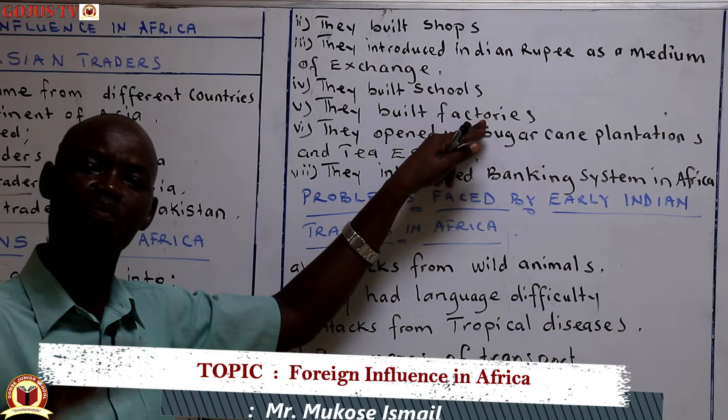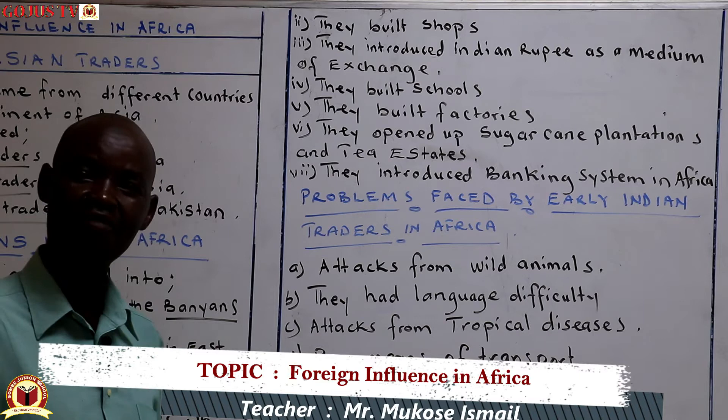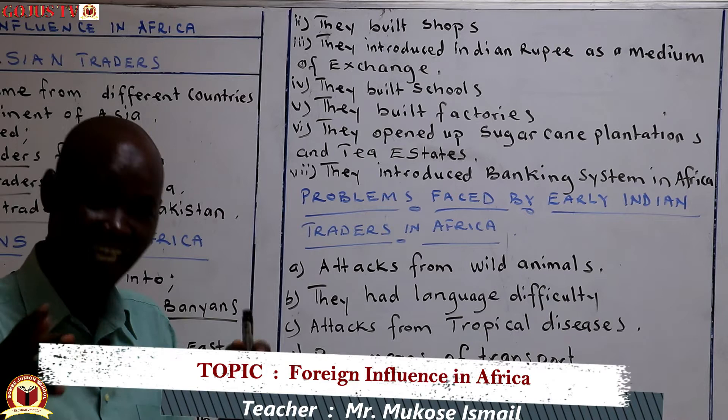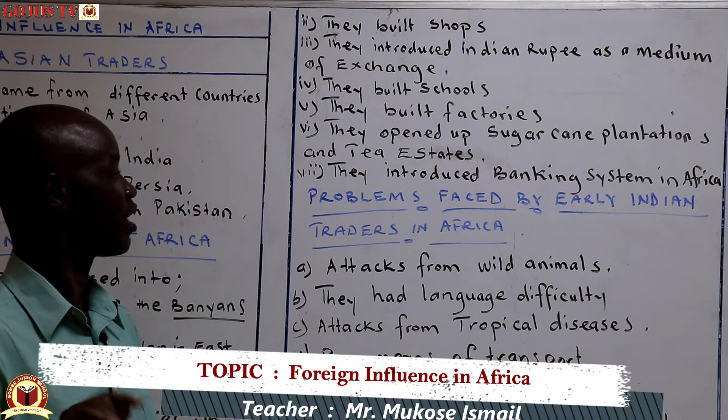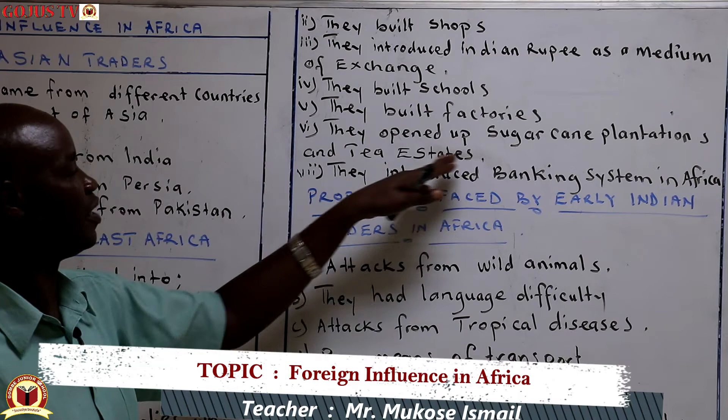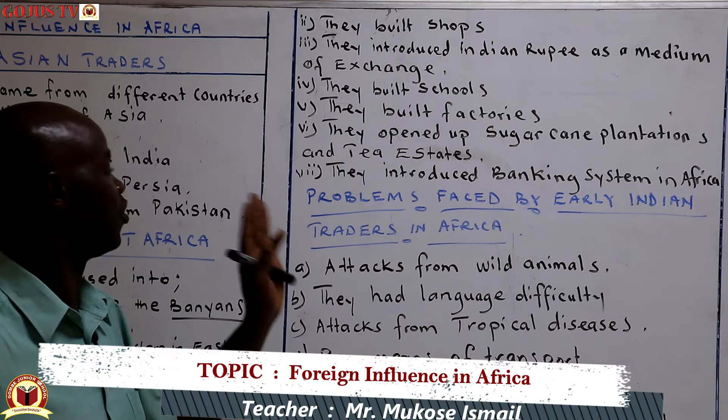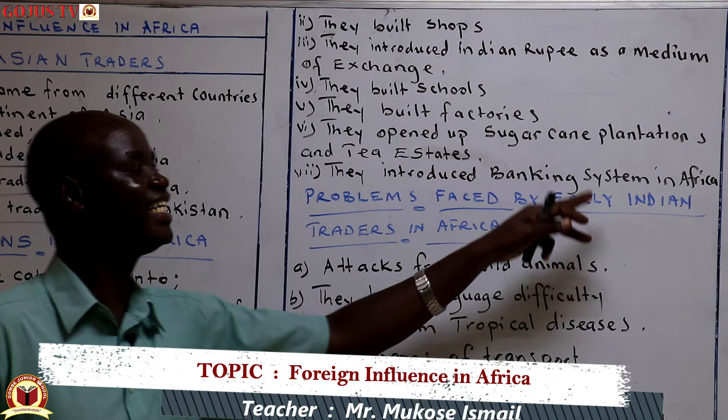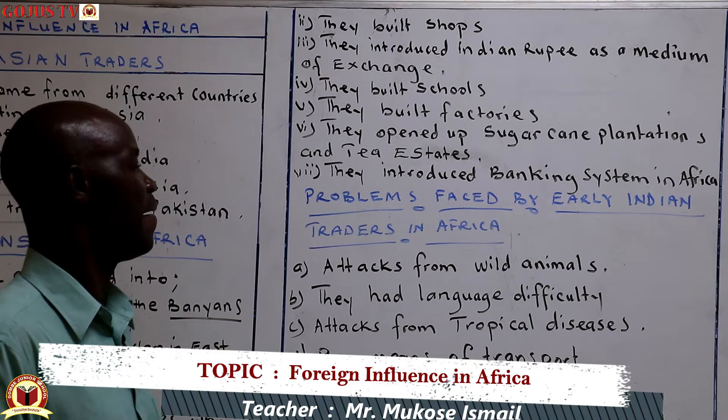Indians also built schools, for example the Aga Khan schools that we have in Uganda and Kenya. They also built factories; we have Kakira Sugar Works, built by Muljibhai Madhvani in Kakira, Jinja district. We have Lugazi Sugar Works, or sugar cane estate. They also opened up sugarcane plantations and tea estates. They also introduced the banking system, which was introduced by the Banianis.